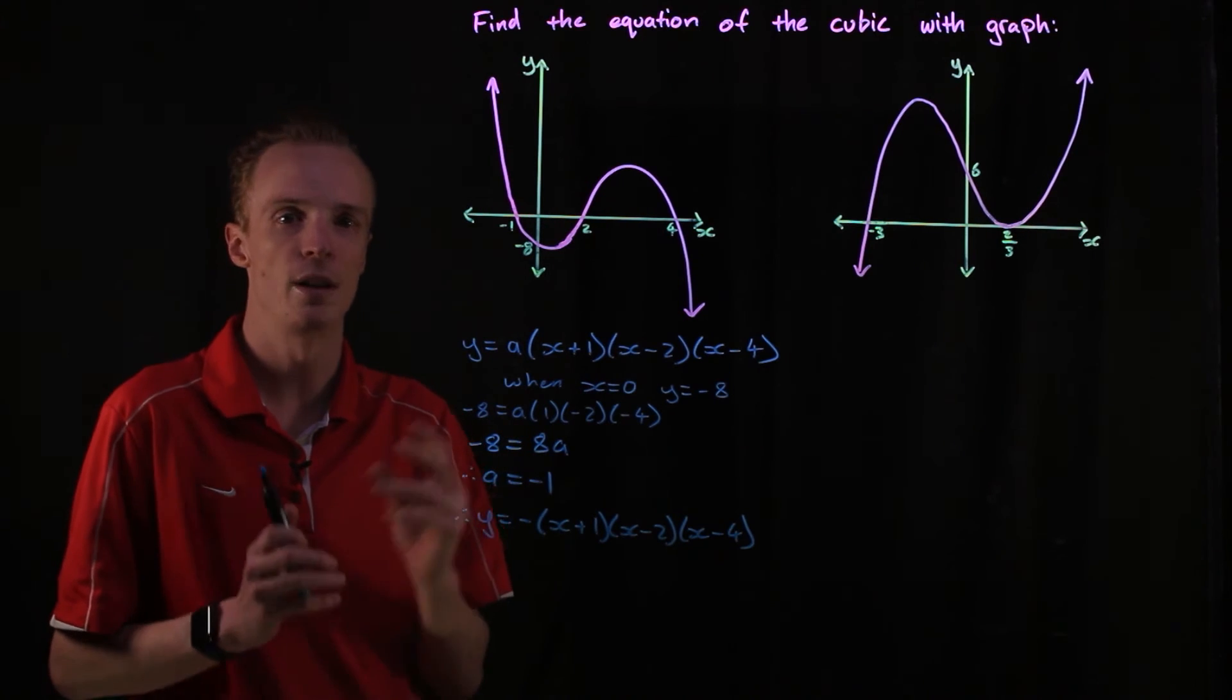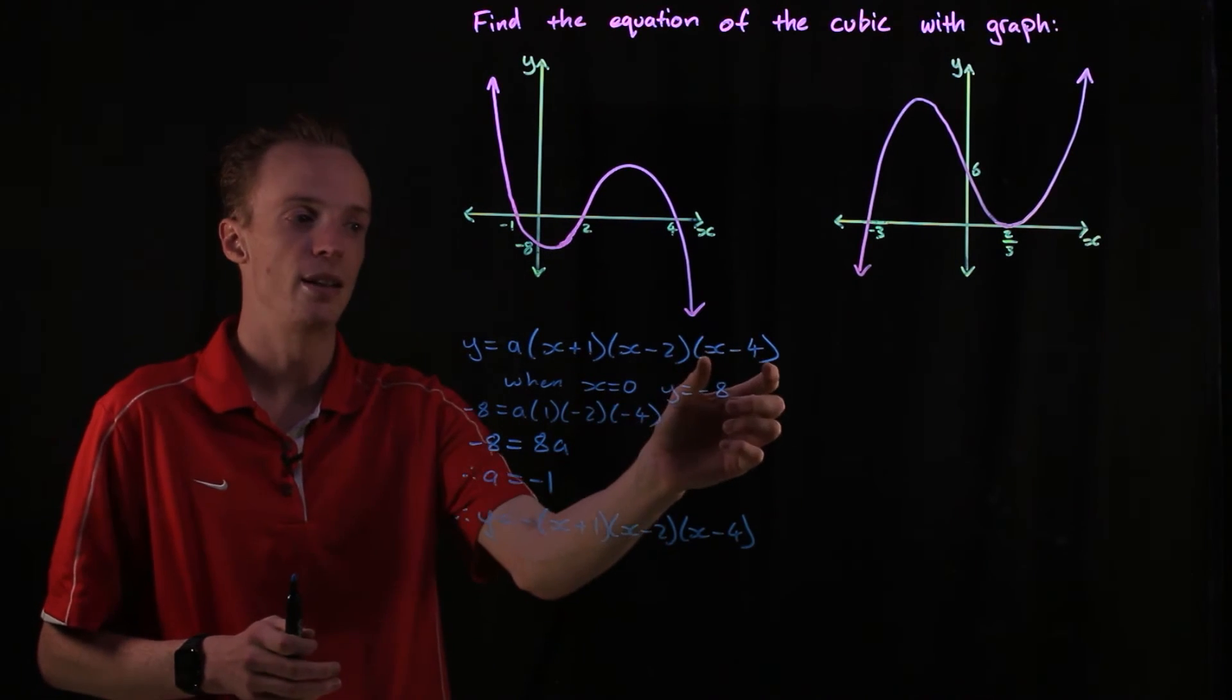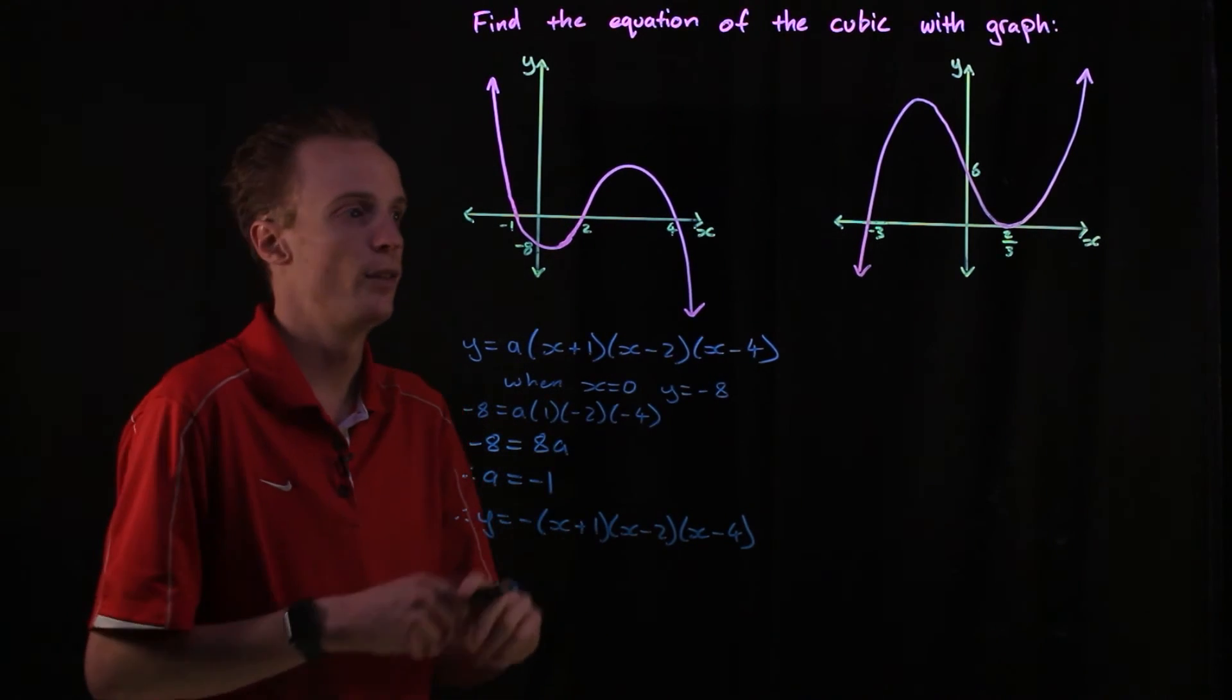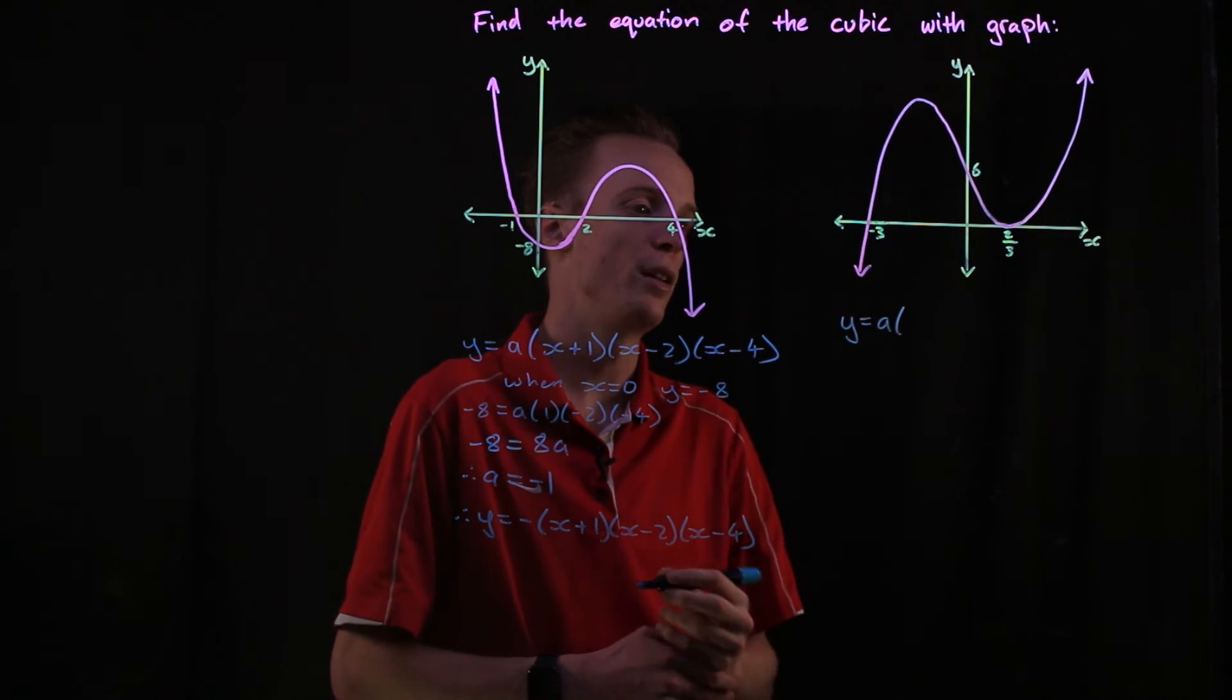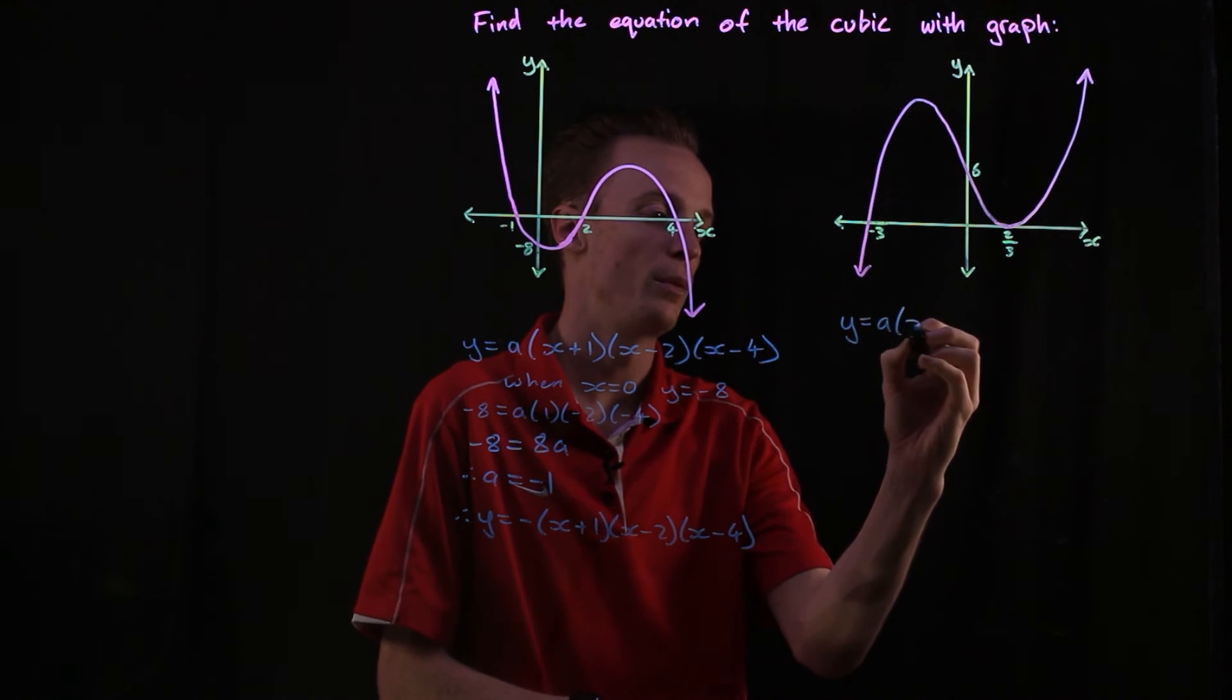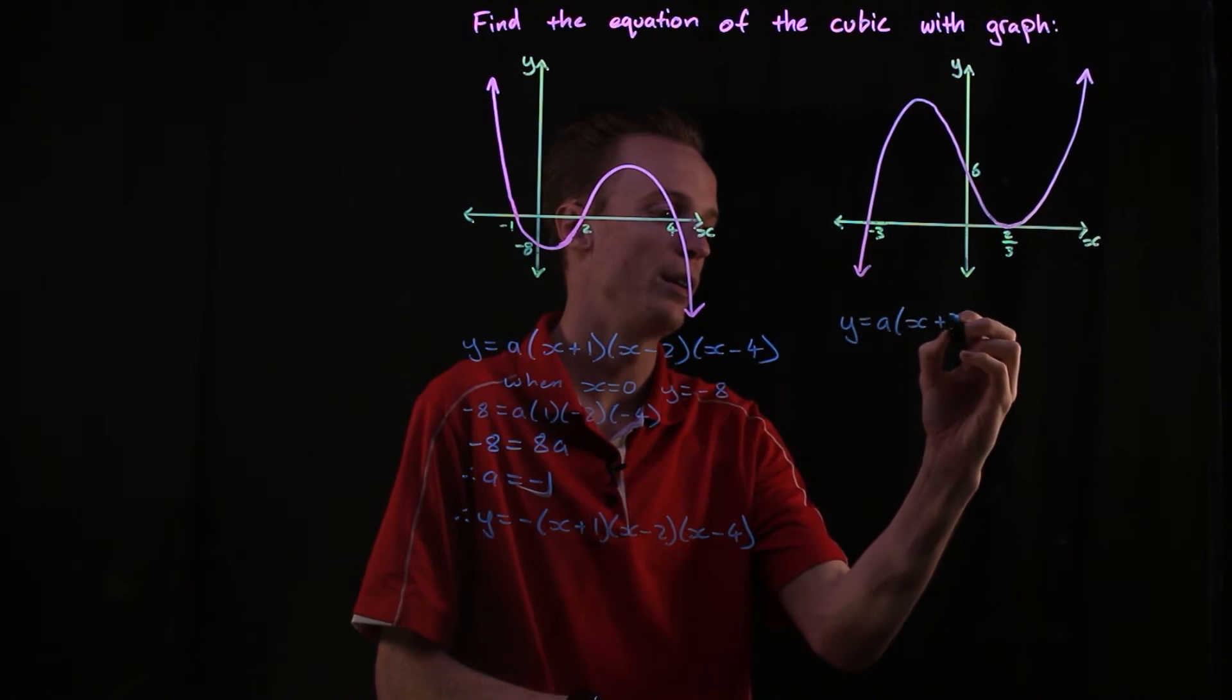With our repeated root we know that that's going to be that linear factor all squared. So when we're going to graph this, we've got this root here which we just do what we did before, so this will be x plus three because it just cuts through.